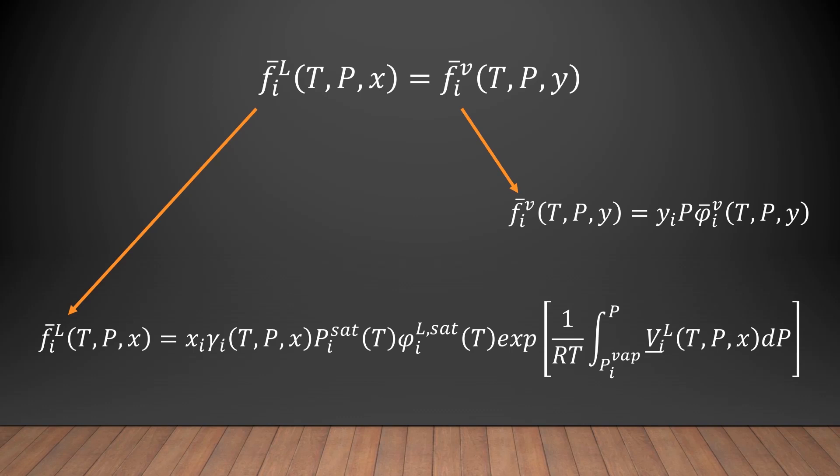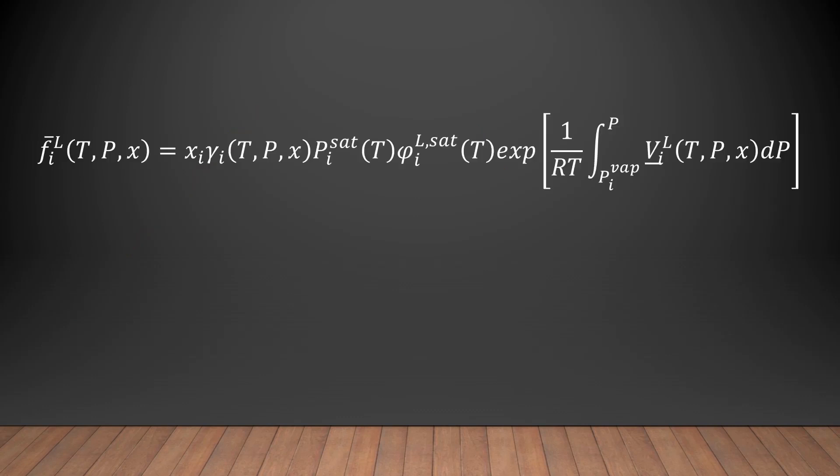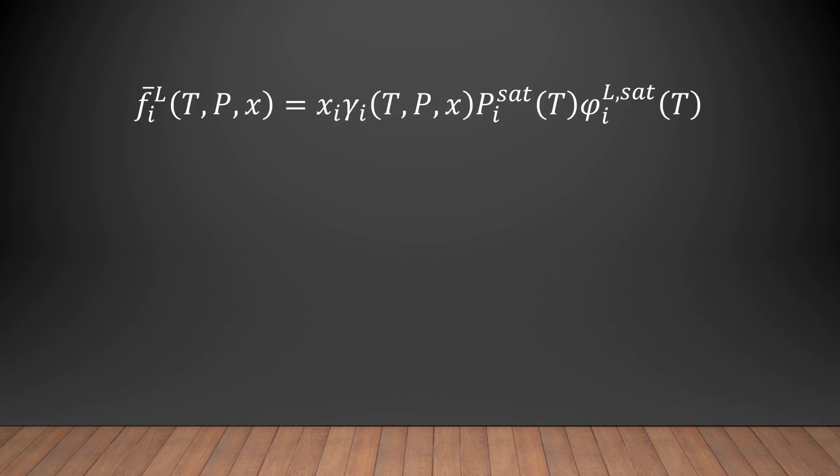Based upon the experimental setup, we can make some assumptions that simplify both equations. We start first with the liquid phase mixture fugacity. Since the experimental system does not operate at high pressures nor low temperatures, it can be assumed that the hydrostatic pressure beyond the vapor pressure is negligible, and therefore the Poynting correction goes to 1. And we're left with this equation here.